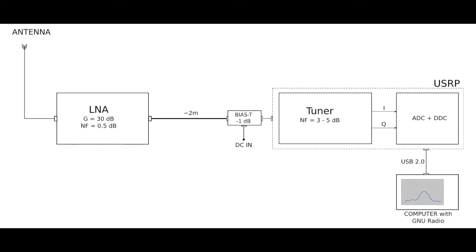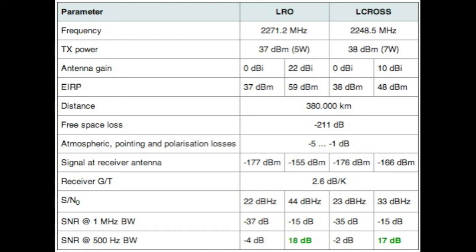Using this setup I expect to have a link budget which looks like this. As you can see, I expect that I will be able to receive signals from both LRO and LCROSS when they use the high gain antenna.